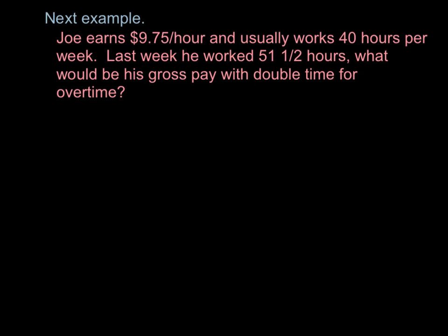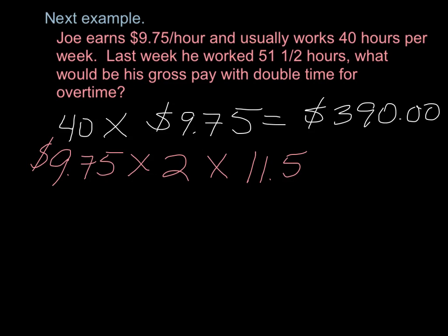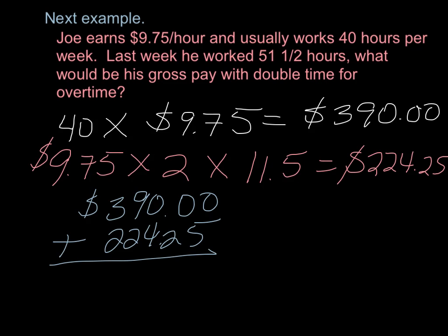Next example. Joe earns $9.75 per hour and usually works 40 hours per week. Last week he worked 51.5 hours. What would be his gross pay with double time for overtime? 40 hours times $9.75 gives us $390.00. $9.75 times 2 times 11.5 overtime hours gives us $224.25. Add the two totals together and the total is $614.25.